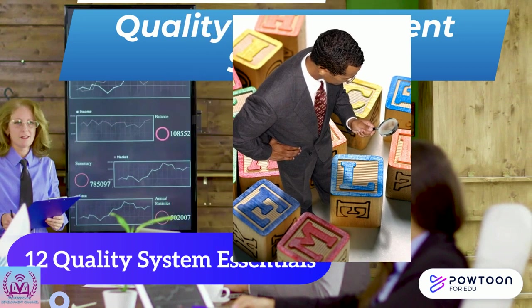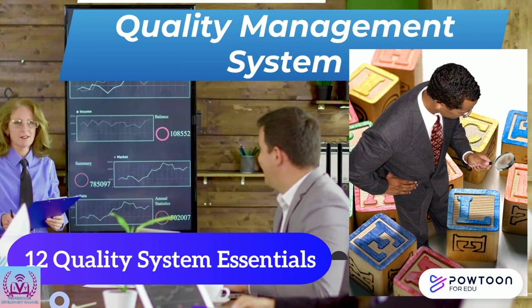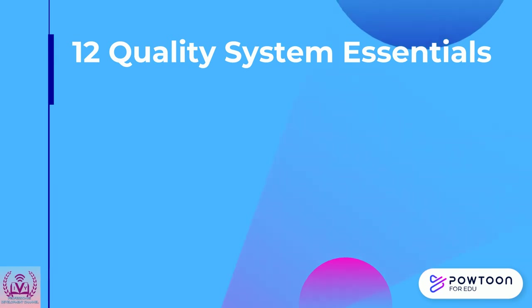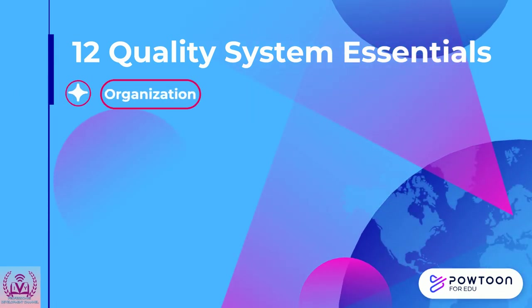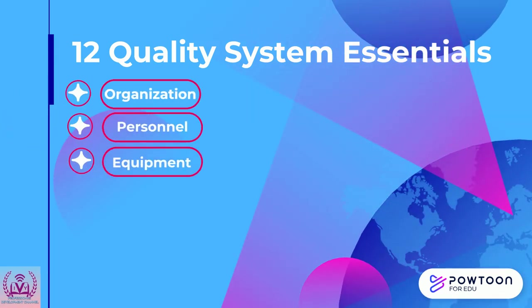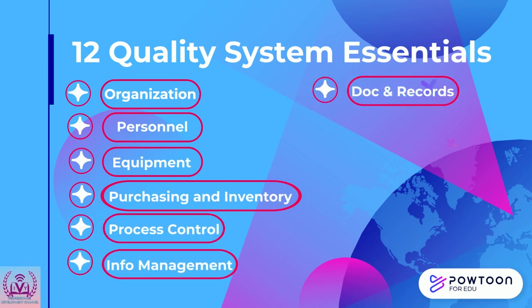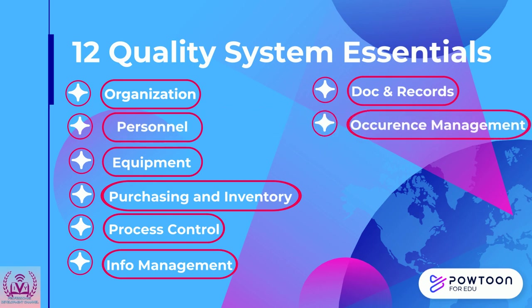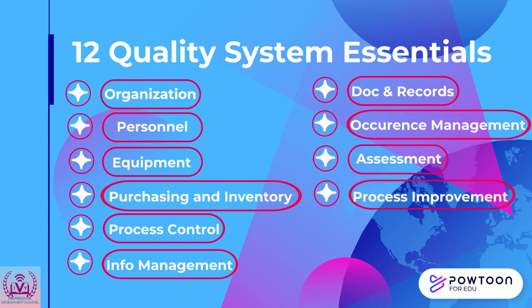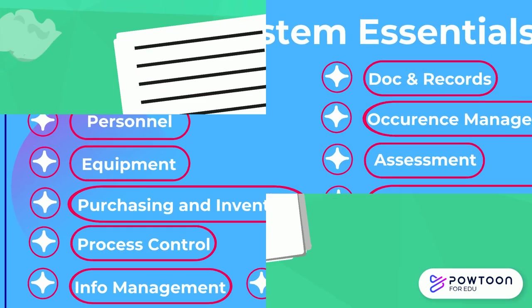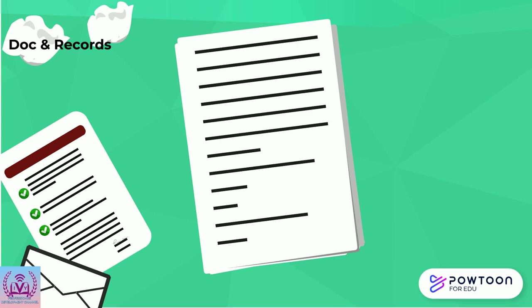Each must be addressed if overall quality improvement is to be achieved. The 12 quality system essentials are: organization, personnel, equipment, purchasing and inventory, process control, information management, documents and recording, occurrence management, assessment, process improvement, customer service, and facilities and safety.